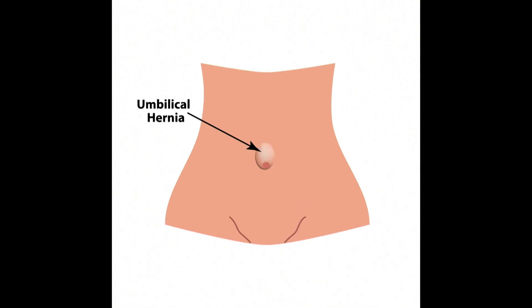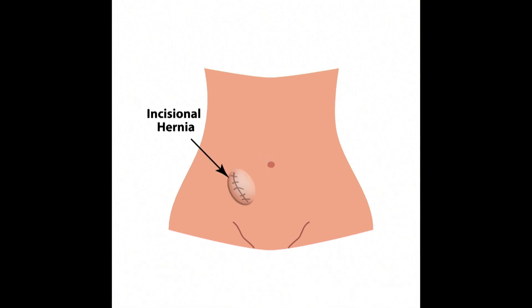Next we have the umbilical hernia, which is very common especially in women after giving birth. Belly button hernias are extremely common — we see them all the time in postpartum ladies. As the belly grows over time, there's a little weakness in the umbilical ring, and once they deliver, some of those tissues are still quite elastic, so they can form a hernia.